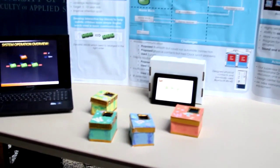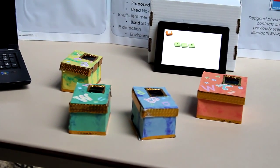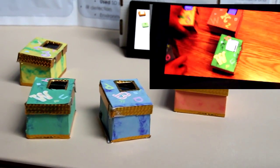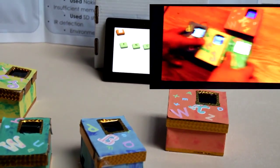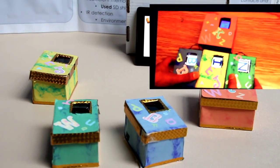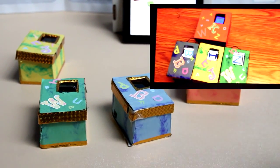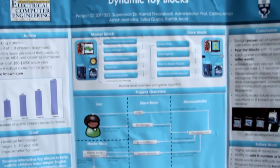Our toy blocks basically are, there is a master block and there are three slave blocks. The master block displays an image and the slave blocks have letters associated to that image. Once you put them in the right order, the master block plays a sound confirming you've won the game. And so it displays different letters and different words so the child can learn through an interactive process.